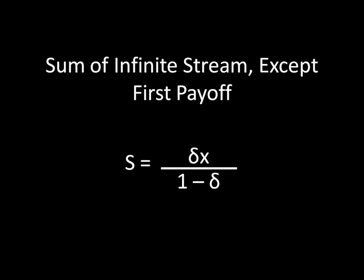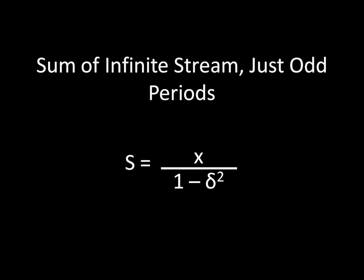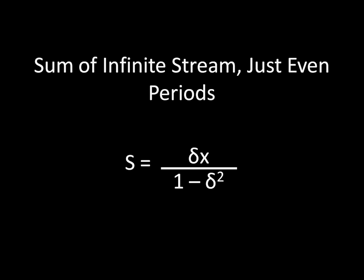Another one that's good to know, the sum of an infinite stream of payoffs but just the odd periods. That's going to be equal to x, that baseline value, divided by one minus delta squared. And the last one I have for you is what happens if you have an infinite stream but just the even periods. And that's going to be delta times x divided by one minus delta squared.